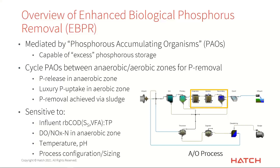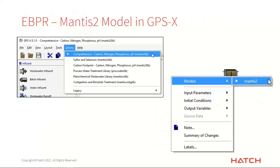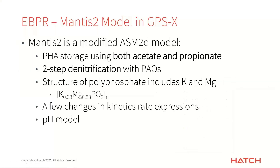Now I want to talk about the actual structure of the Mantis 2 model and how we capture these processes. Mantis 2 is our default biological model, the one you find when you start up GPSX in the comprehensive library. We've been using this as our default model for about 12 or 13 years, calibrating and validating it over many of our own projects. It basically started as an adaptation of the ASM 2D model, with PAOs — phosphorus accumulating organisms — having growth and decay steps under various environmental conditions.